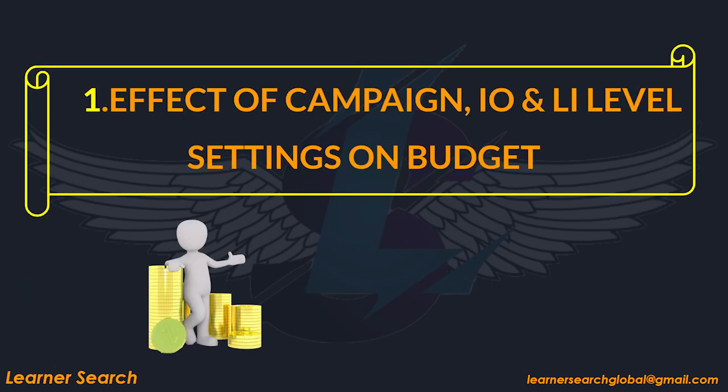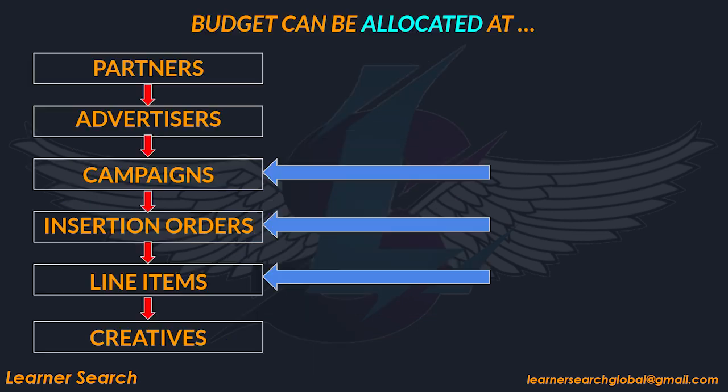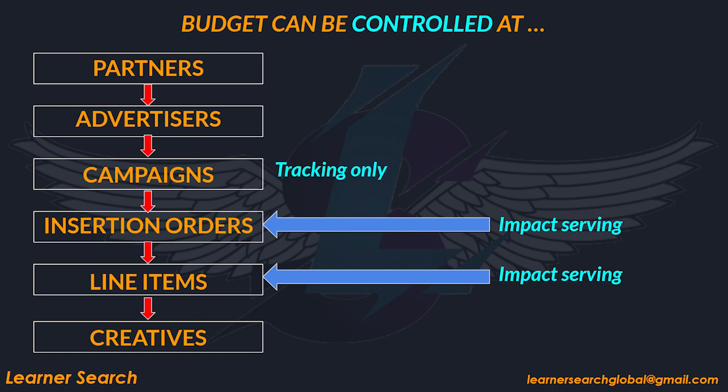Effect of campaign IO and line item level settings on budget. The platform hierarchy is shown in this slide. Budgets can be allocated at 3 levels: campaign, IO, and line item levels. It can, however, only be controlled at IO and line item levels.